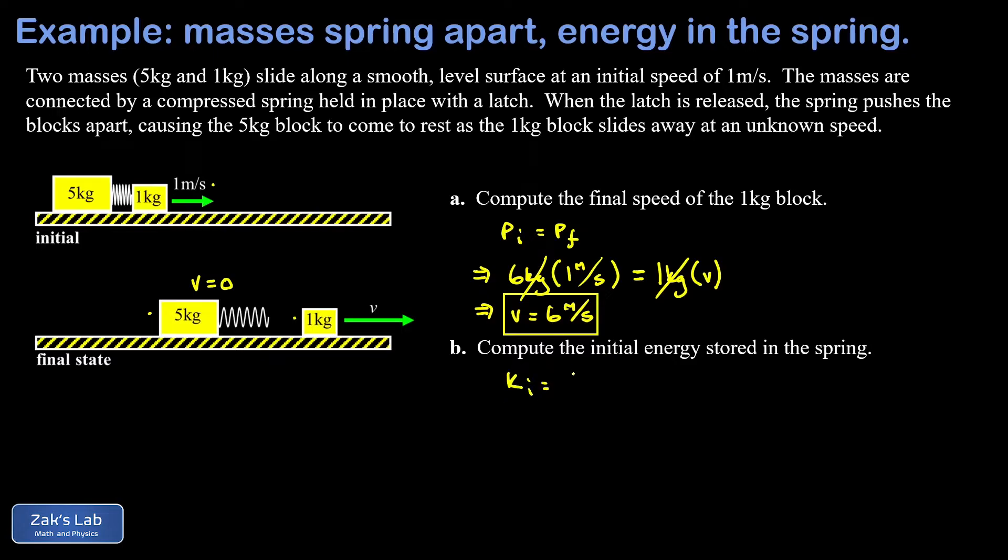We had initially six kilograms, so I'm plugging into one half mv squared. We had six kilograms moving at a speed of one meter per second, so I have one half times six times one squared. This gives me three joules of initial kinetic energy.